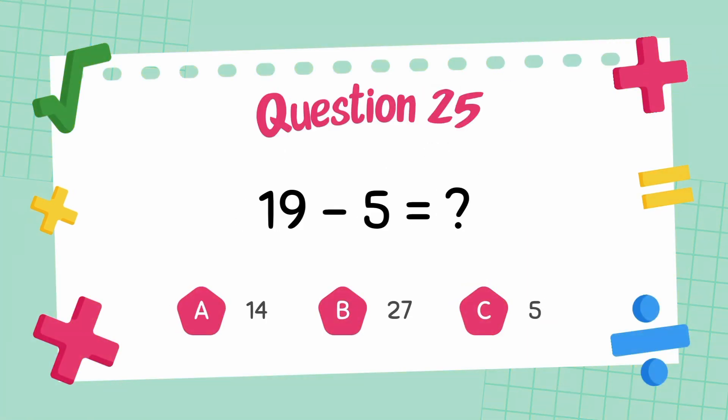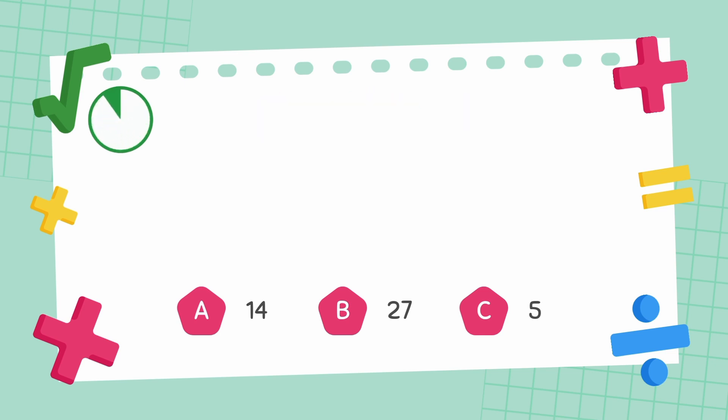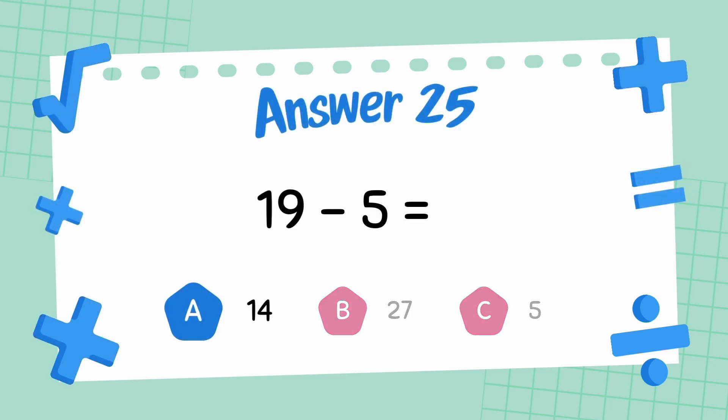What is 19 minus 5? What is 20 minus 5? The answer is 8.